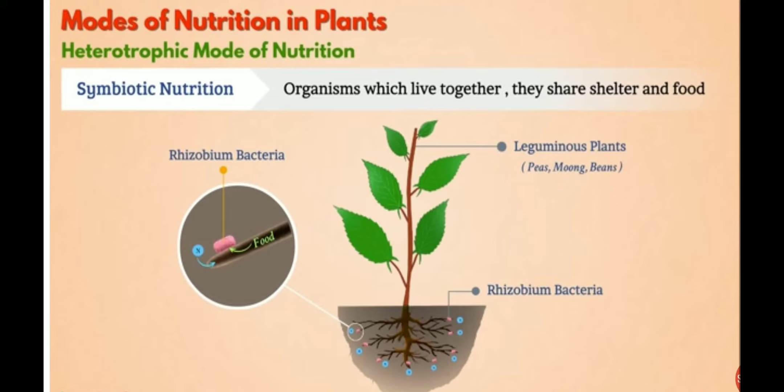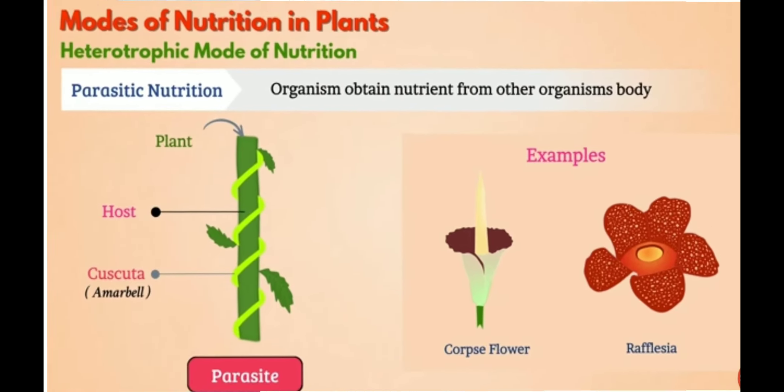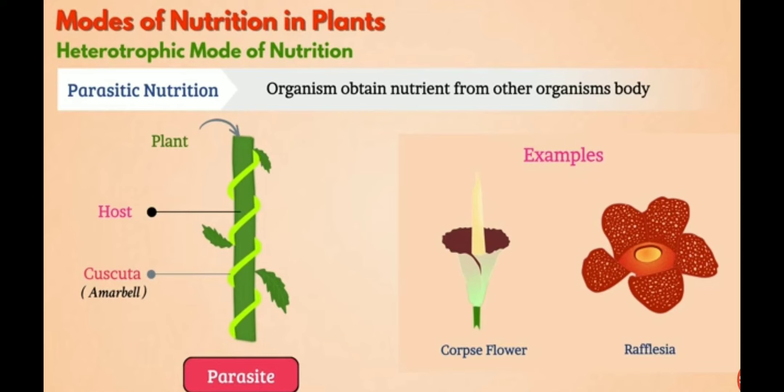I hope everyone understood symbiotic nutrition. Let's see the next topic: parasitic nutrition. Some plants like cascota, locally called amarbell, grow over other plants and obtain nutrients from them. Such plants are called parasitic plants, and the plant on which it grows is called the host.